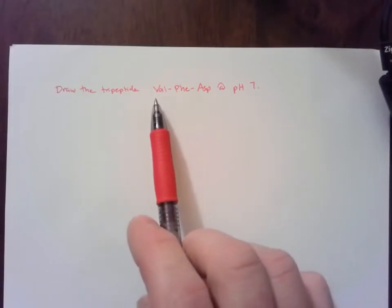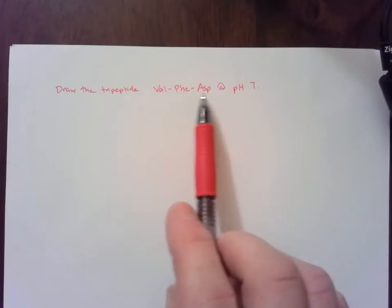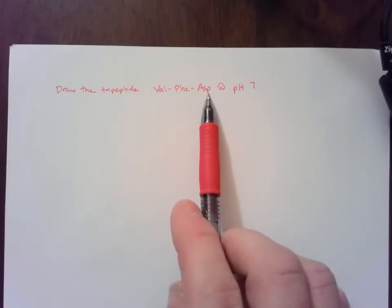We're always going to start with the N-terminus on the left. So the N-terminus is going to be valine, and the C-terminus is going to be aspartic acid.